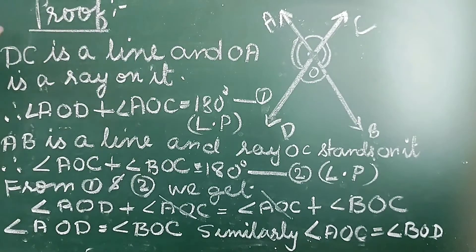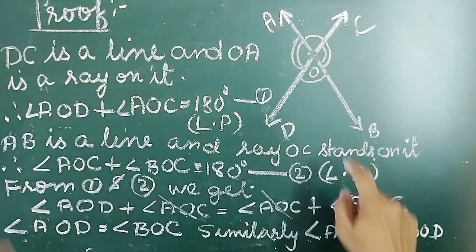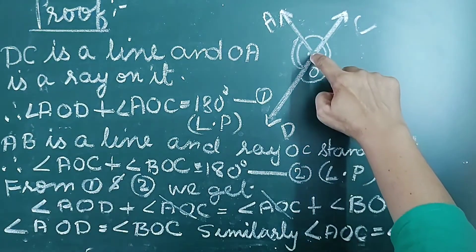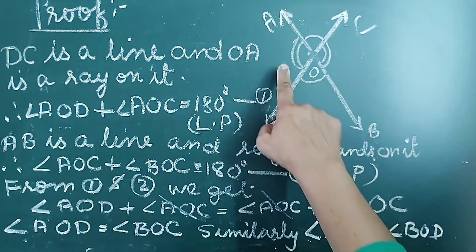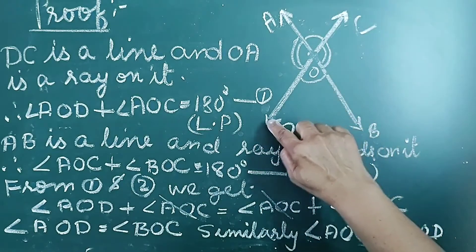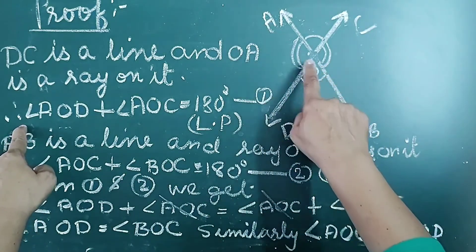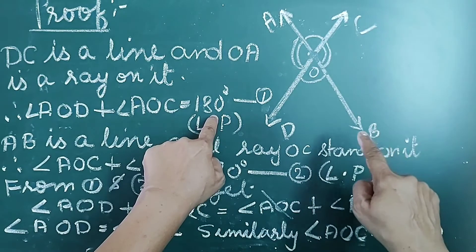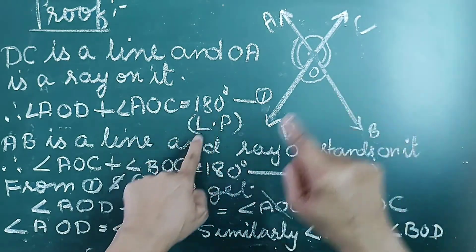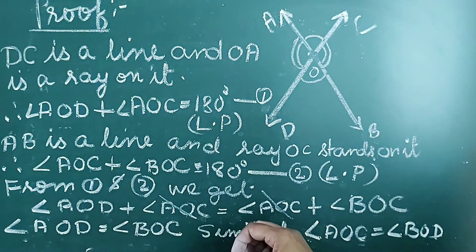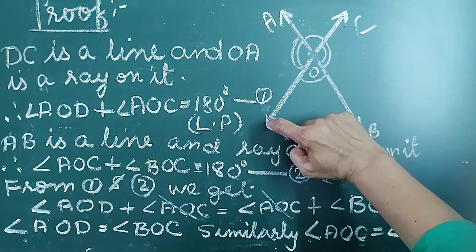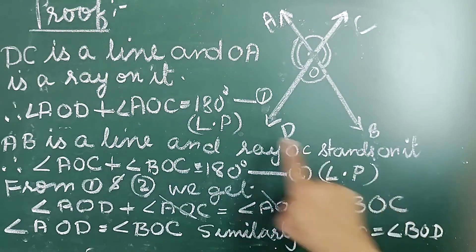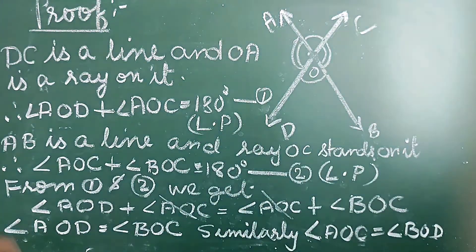Next part of the theorem is the proof. From the figure, DC is a line and OA is a ray on it. Therefore, angle AOD plus angle AOC equals 180 degrees, because they form a linear pair of angles. This is equation number 1.